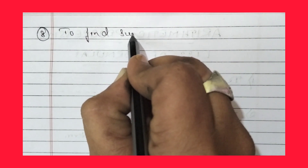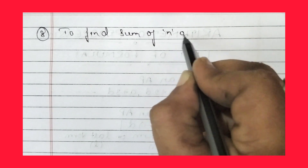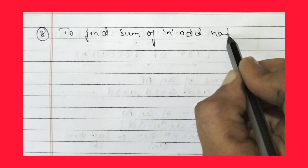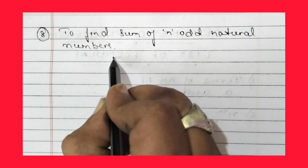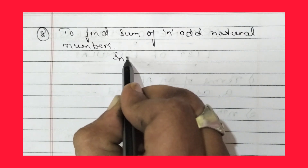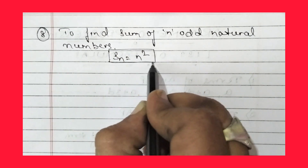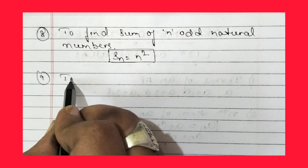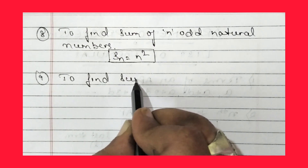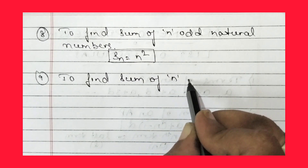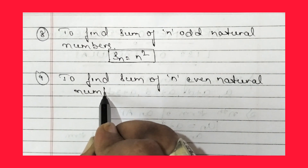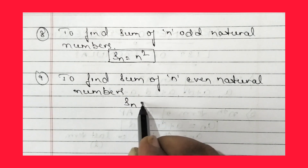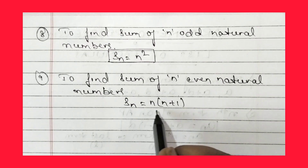The eighth formula is to find the sum of n odd natural numbers: Sₙ = n². The ninth formula is to find the sum of n even natural numbers: Sₙ = n(n+1).